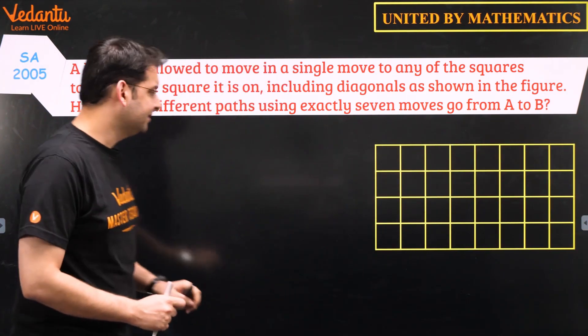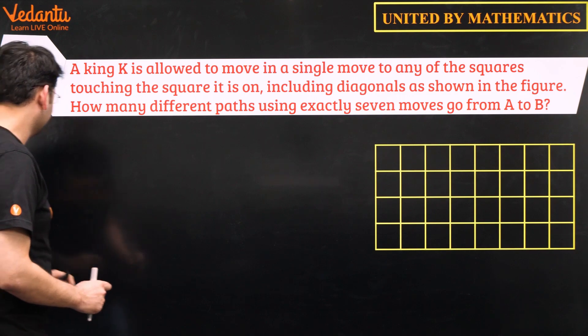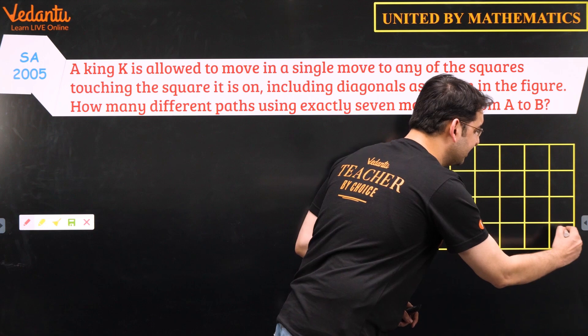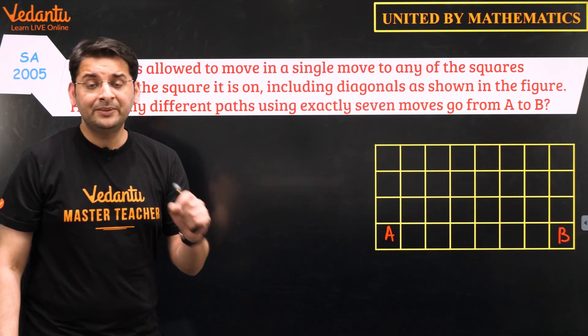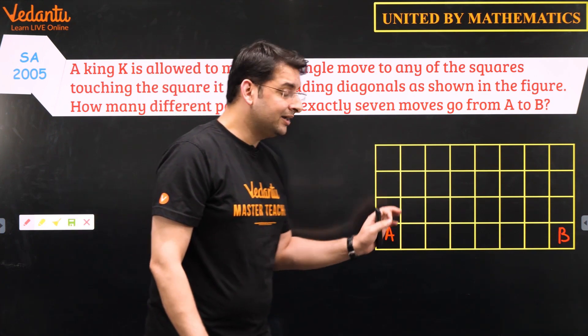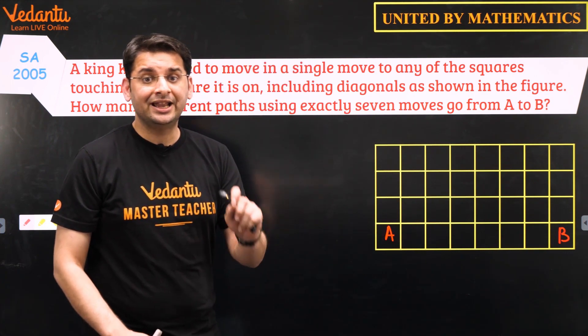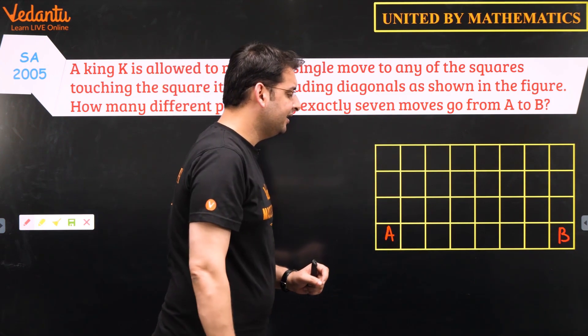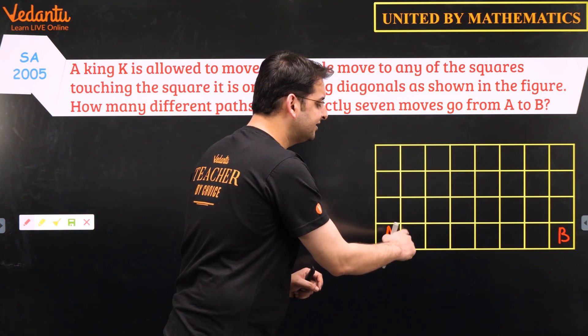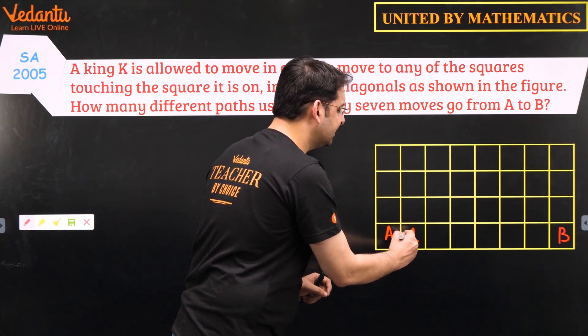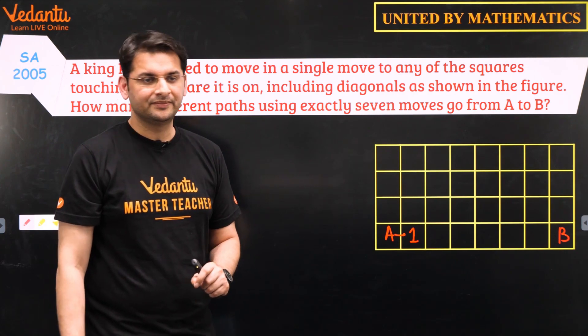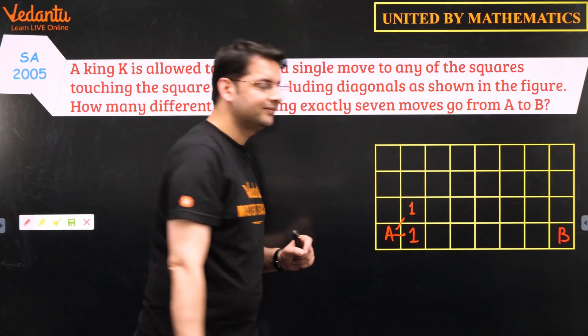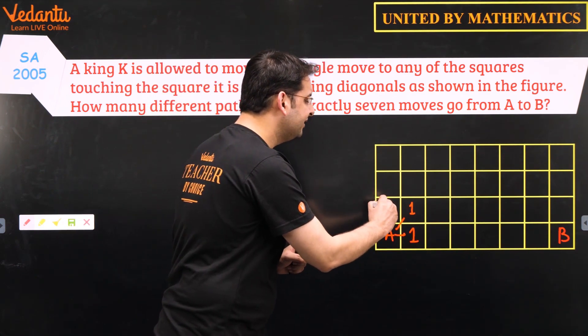Imagine this matrix. Imagine our king is in this particular box and it has to reach this box. So every box I'll write a number which will represent the number of ways the king can get into that box. For example, if the king is here, the number of ways to reach this particular box is 1, that is 1 shift towards the right. Likewise, the number of ways in which king can go to this box is 1, that is diagonally, and simply this would be 1.